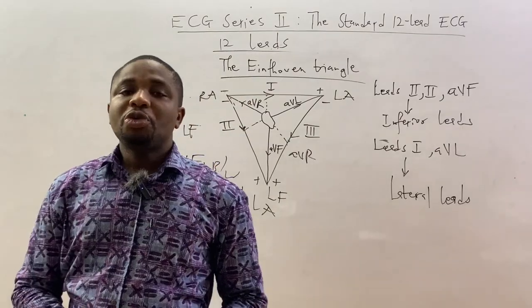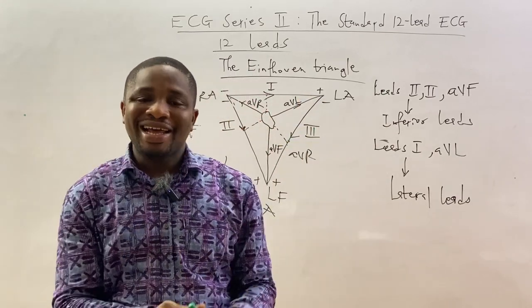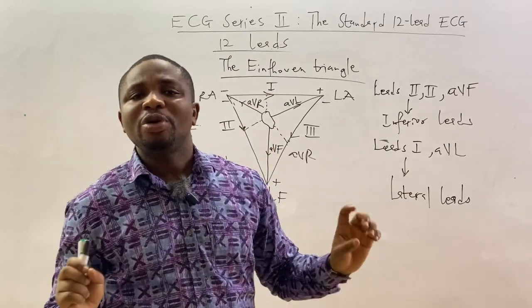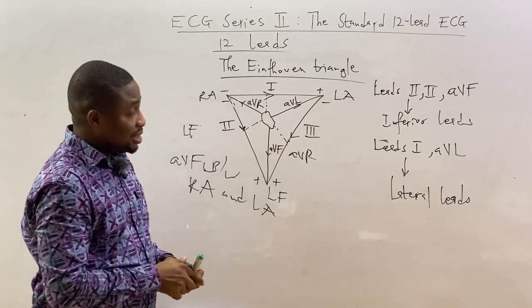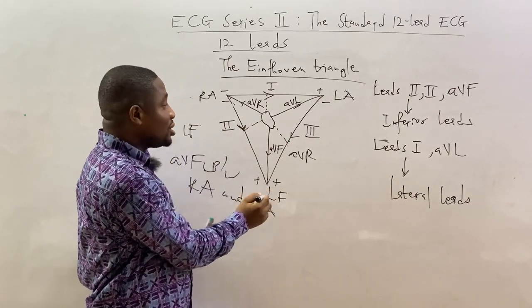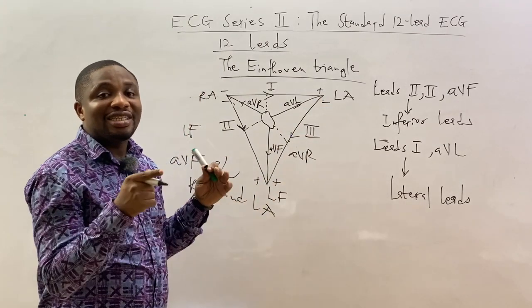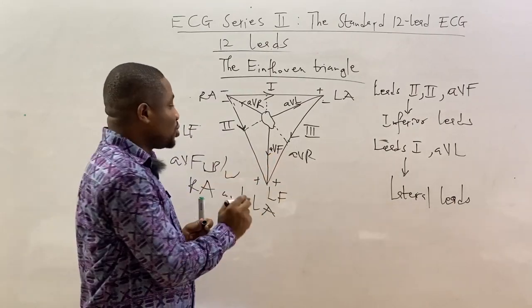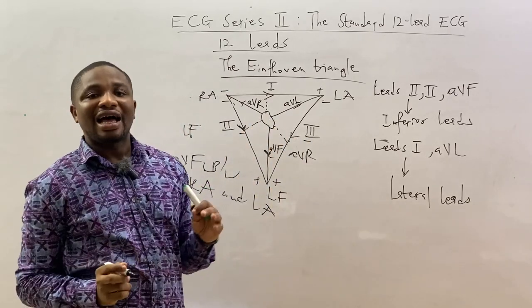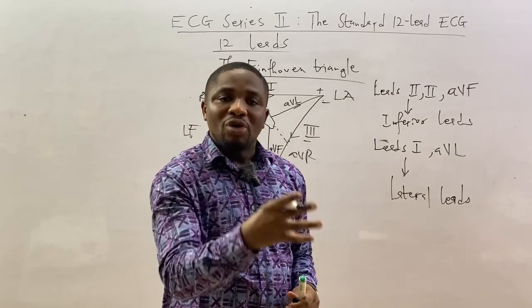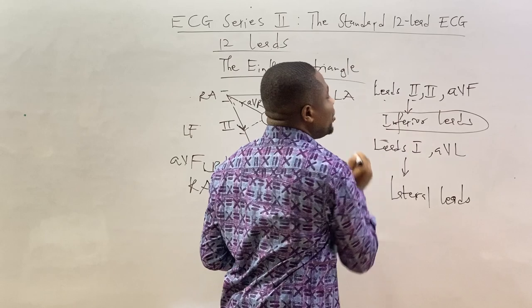Now let's classify the leads by which aspect of the heart they look at. Lead two looks downward — inferior. Lead three also looks downward — inferior. AVF also looks downward — inferior. So lead two, lead three, and AVF are inferior leads, looking at the inferior aspect of the heart.